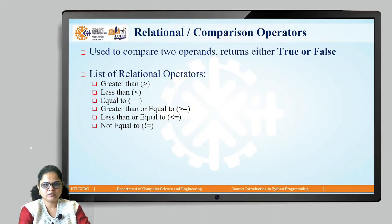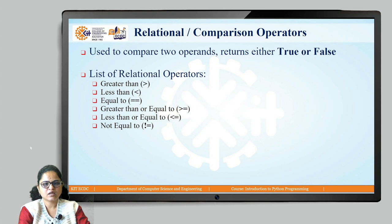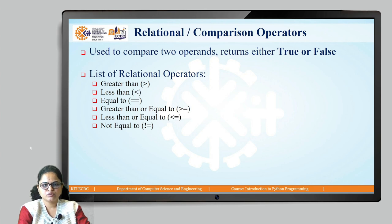The next type of operator is the relational operator, also called a comparison operator, which is used to compare two operands and returns either true or false as Boolean values. There are different relational operators: greater than, less than, equal to, greater than equals to, less than equals to, and not equals to.